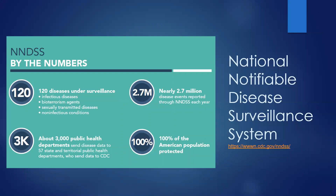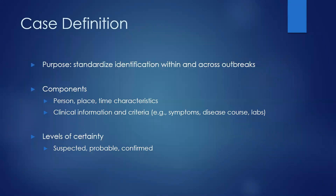The National Notifiable Disease Surveillance System currently captures about 120 diseases — largely infectious diseases, but also some bioterrorism agents, a handful of non-infectious conditions, and sexually transmitted infections. Nearly three million diseases are reported through this system every year. Healthcare providers and labs report to their local health department, and those local departments send the information up to the CDC, which aggregates it and makes it publicly available.